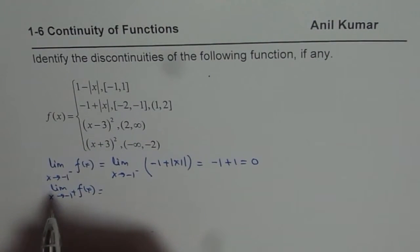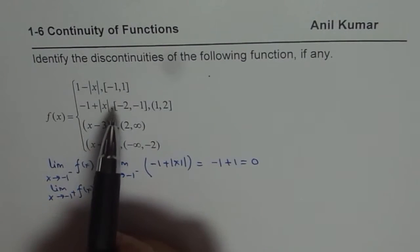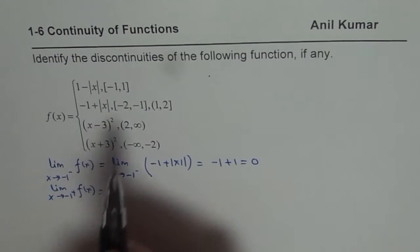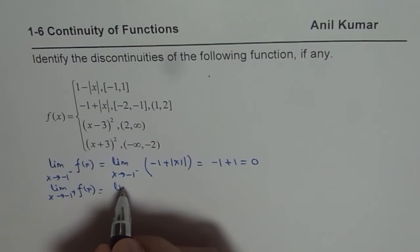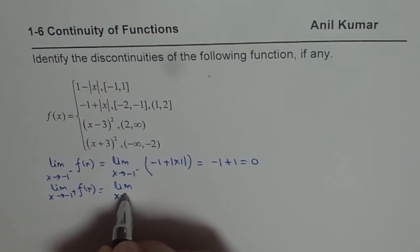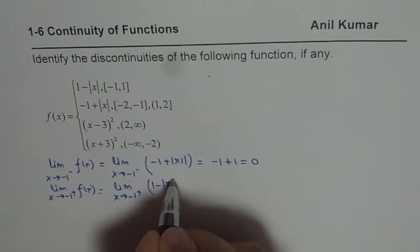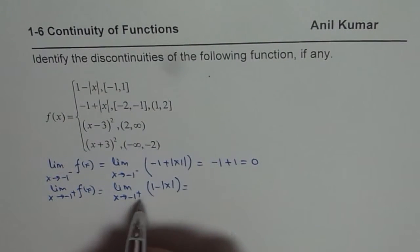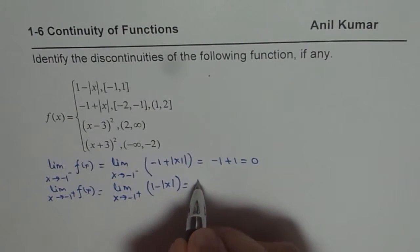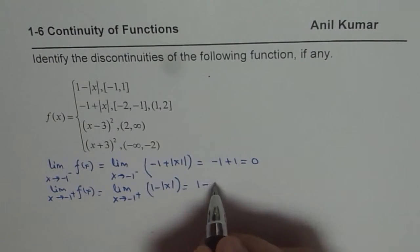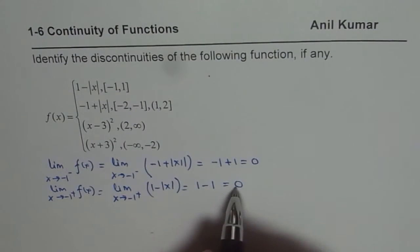Now let us find the limit of the function as x approaches minus 1 from the positive side. When approaching from the right, we are dealing with the first piece, which is 1 minus absolute value of x. So the limit as x approaches minus 1 from the right is 1 minus absolute value of minus 1, which is 1 minus 1, giving us 0. So this limit is also 0.